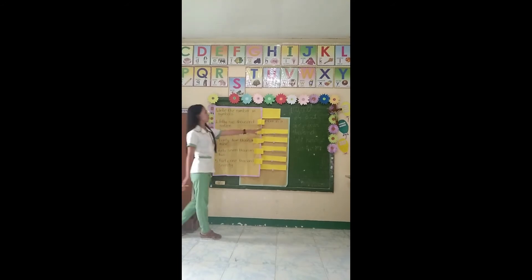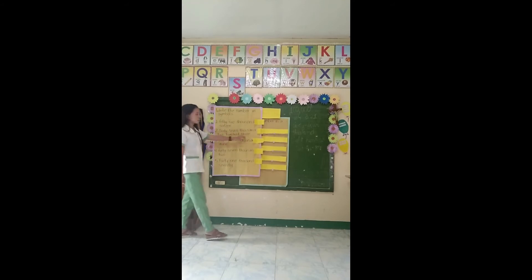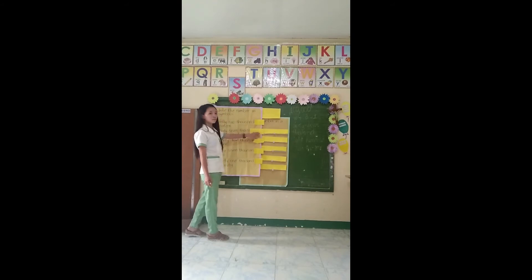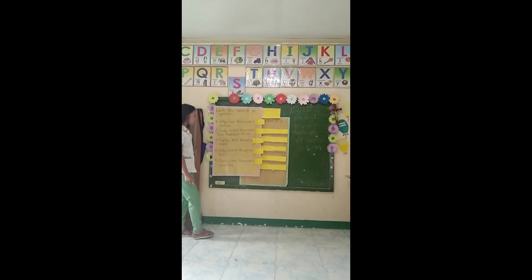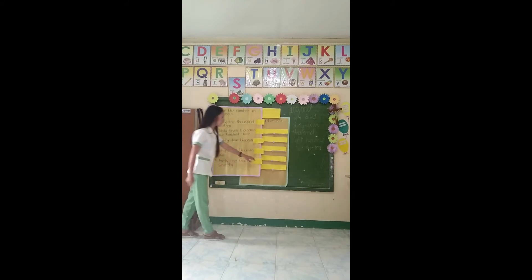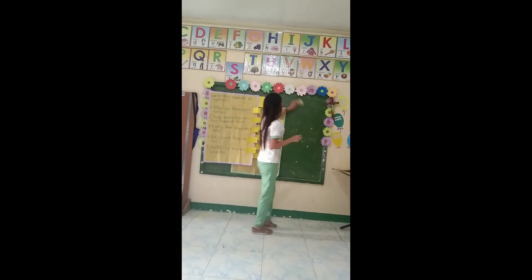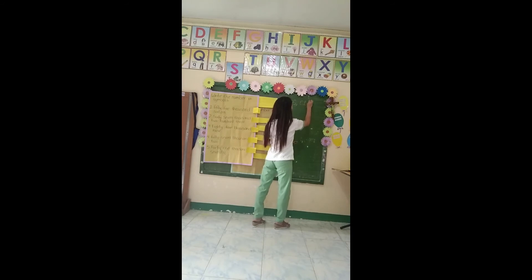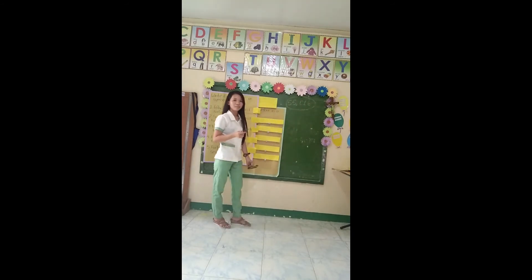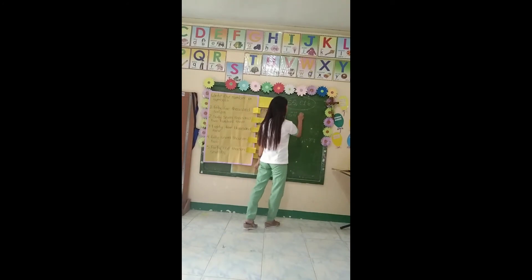Number 1: 55,016. Number 2: 67,203. Number 3: 84,009. Number 4: 57,002. Number 5: 41,070. Is that clear? So class, how do you read this symbol? 55,016 — how do you read this symbol?